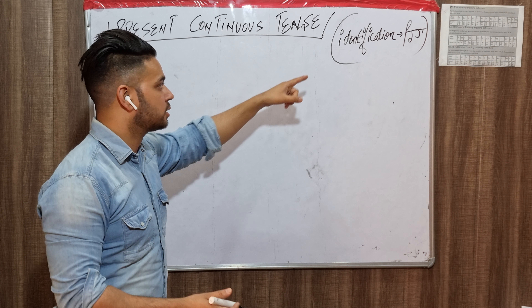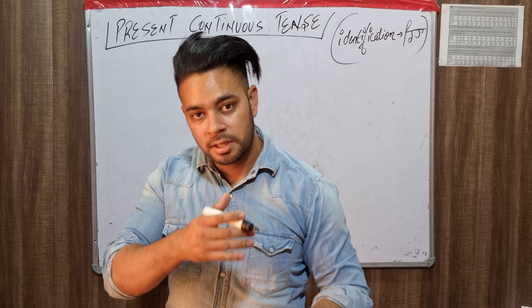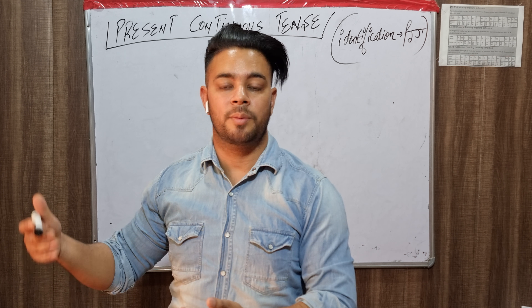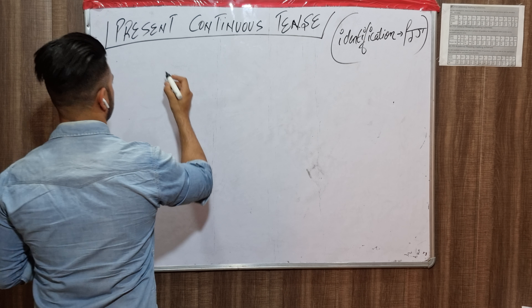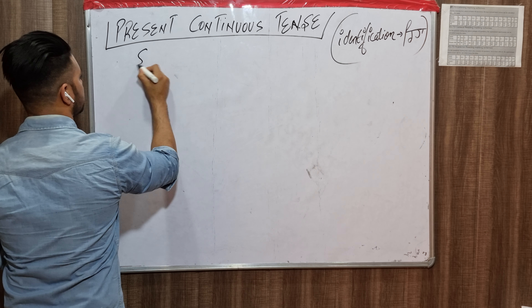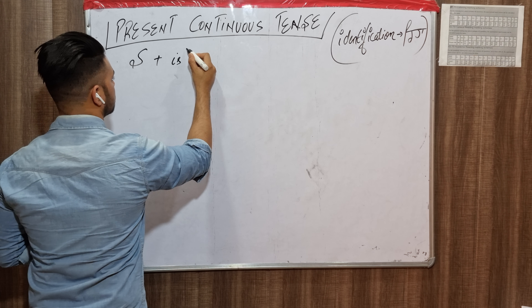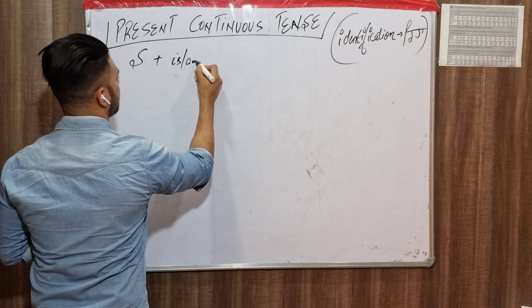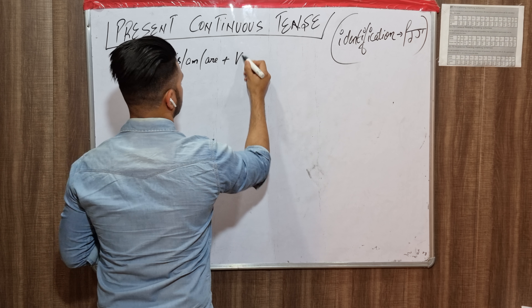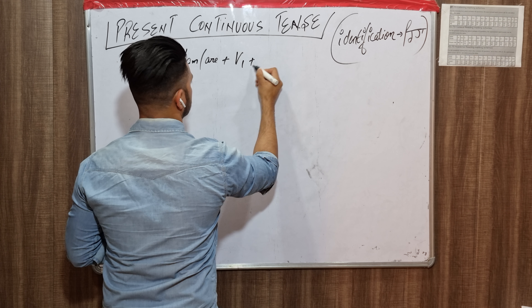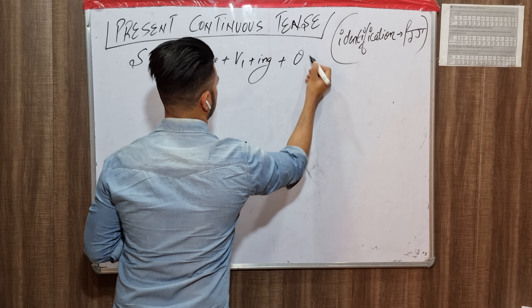So our present continuous tense formula is: Subject + is/am/are + verb form + ing + object. Let's start with this structure.